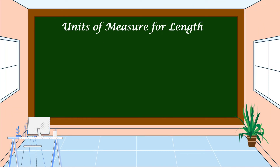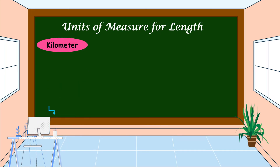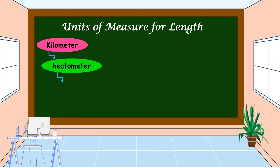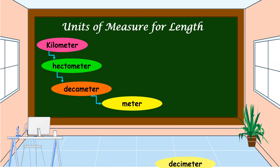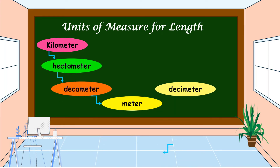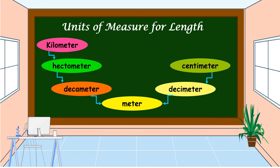The units of measure for length, or linear measurement, are: kilometer, hectometer, decameter, meter, decimeter, centimeter, and millimeter.